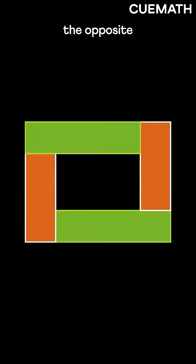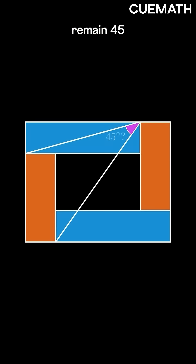Now, if only the opposite rectangles are identical, does the angle still remain 45 degrees?